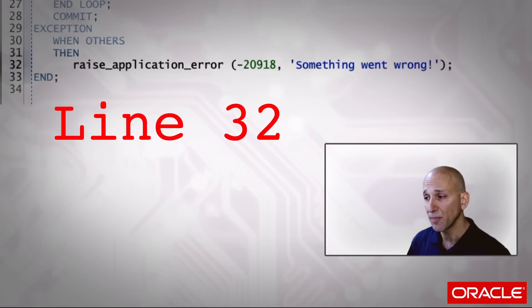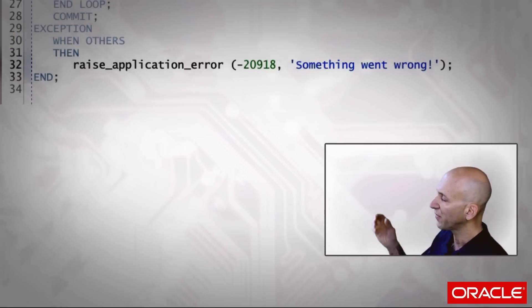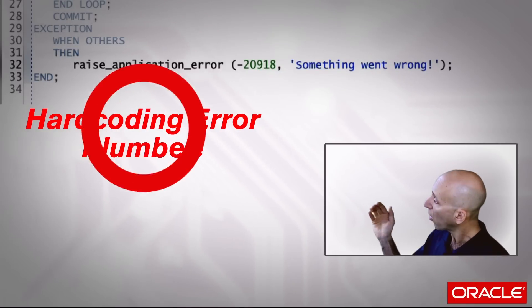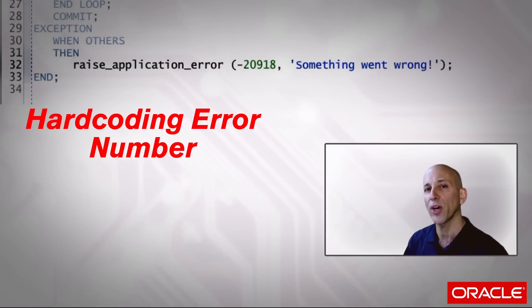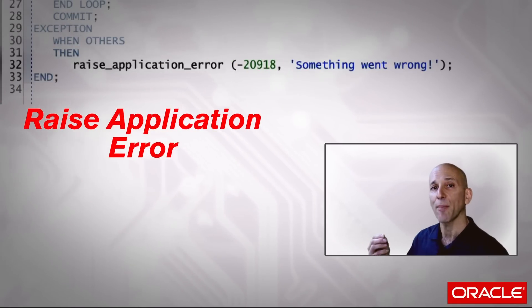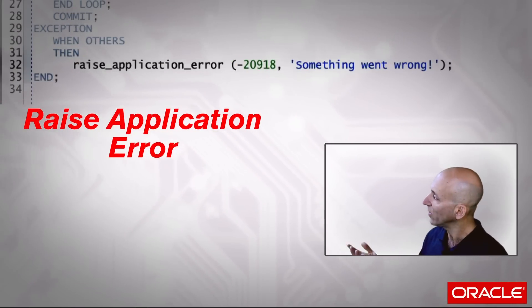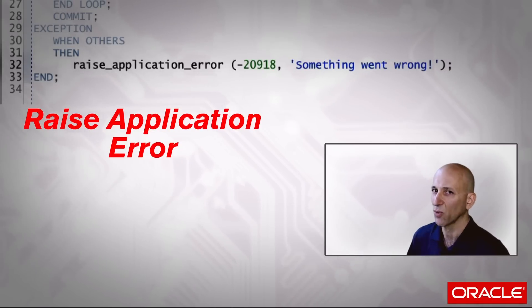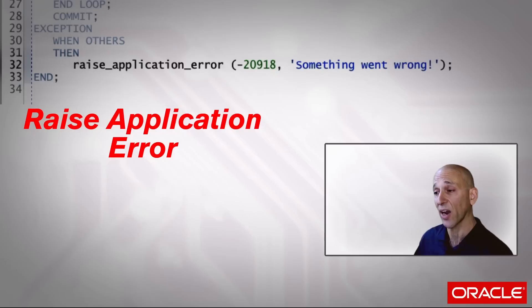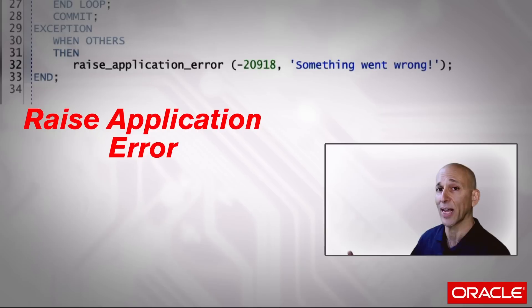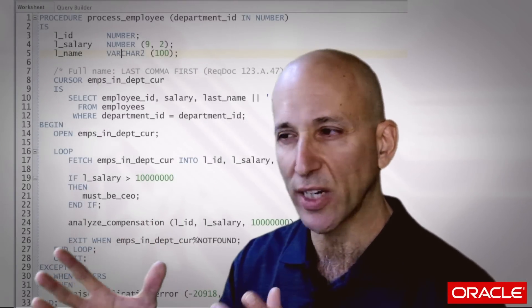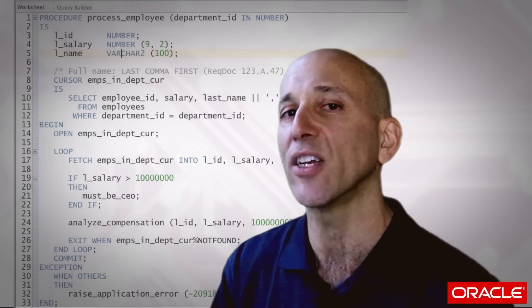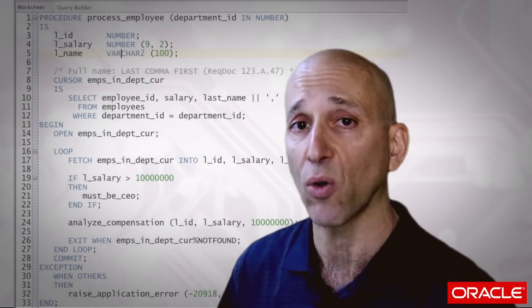Moving to line 32, we've got several different hard codings. Some are obvious: I'm hard coding my error message, and I'm hard coding my error number. But one other point is the raise_application_error invocation itself — I'm hard coding the mechanism I'm using to raise an error. Maybe there's a better way to call raise_application_error and hide it from this layer of code. So, 33 lines of code, 10 to 12 different forms of hard coding. That should give you a sense of a different way of looking at your code and understanding the pitfalls we can inadvertently enter into. Next, we'll explore the ways to resolve all these hard codings.